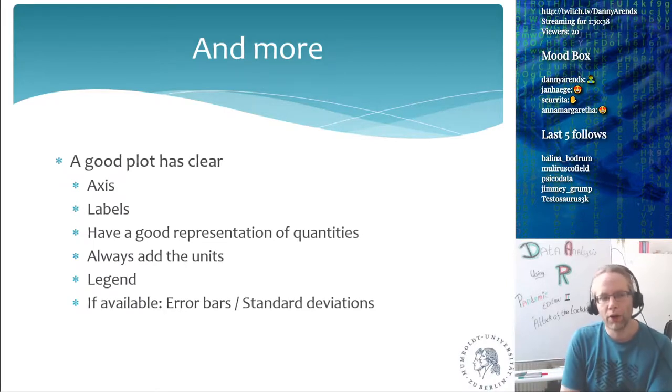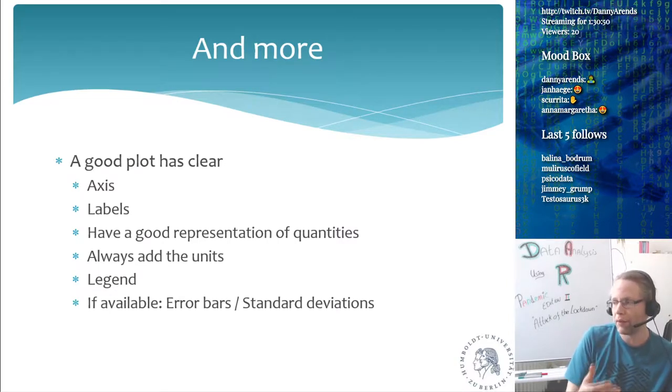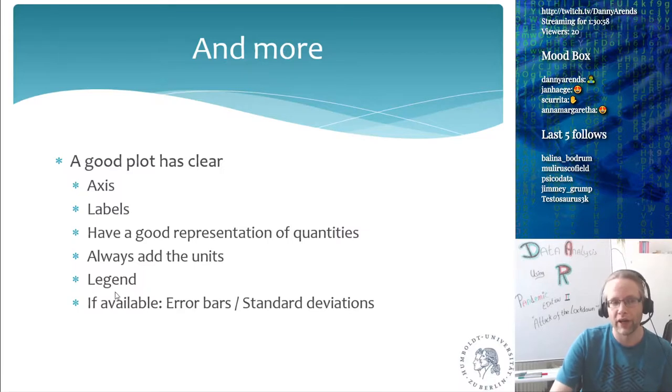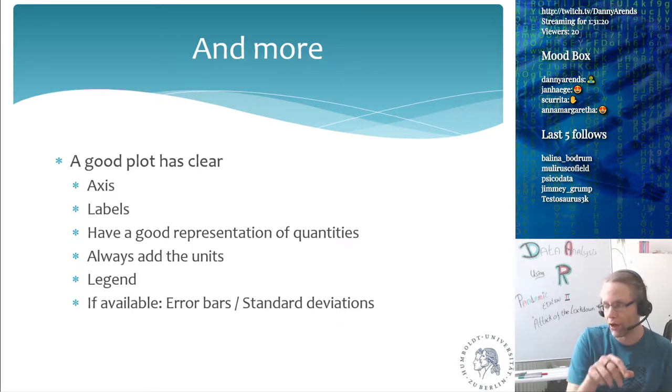Okay, some requirements for a good plot. It has to have a clear axis, a clear label. It has to have a good representation of quantities, and I always add the units to the axis. I want to know if it's wind in miles per hour or in centimeters or in meters, so you have to have units in your plots. A plot always needs to have a legend, and a legend always needs to mention everything in the plot. So if there's a line in the plot, the line needs to be in the legend as well. And, of course, if it is available, add things like error bars and standard deviations, because that's the way that if you work in science, you have to show that there was some variation in your measurements. So when you have a box plot, or not a box plot, but if you have like a bar plot, then the bar plot should have an error bar, which is the standard deviation that you saw in your data. So because you're not having a single measurement, you're having a group of measurements.